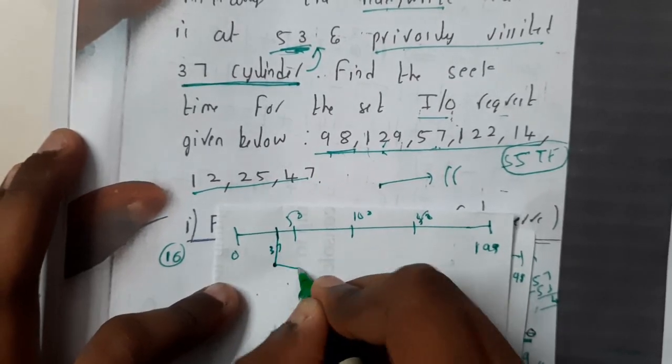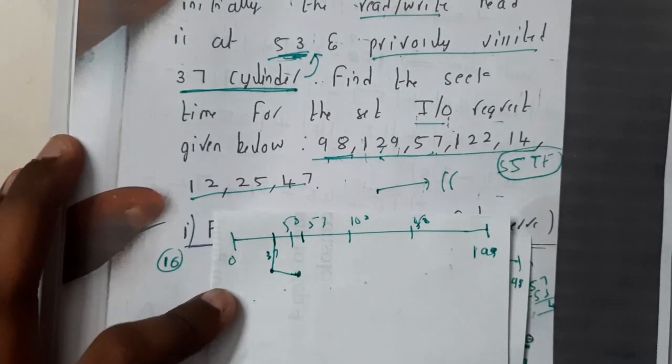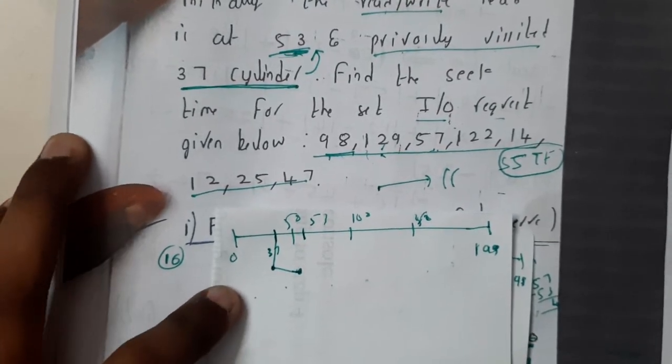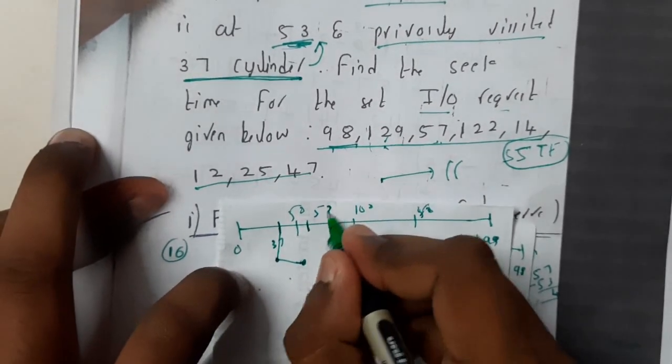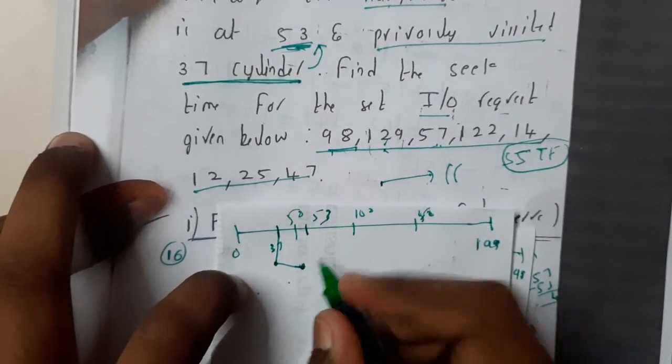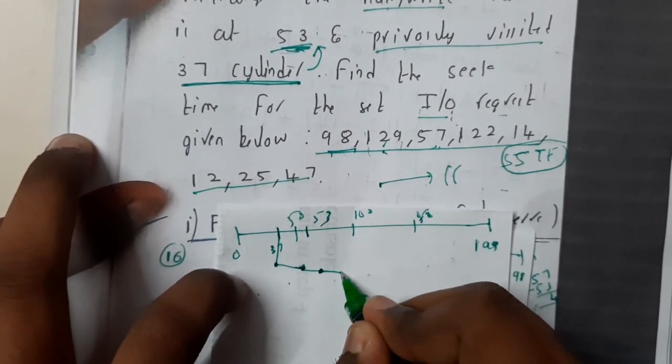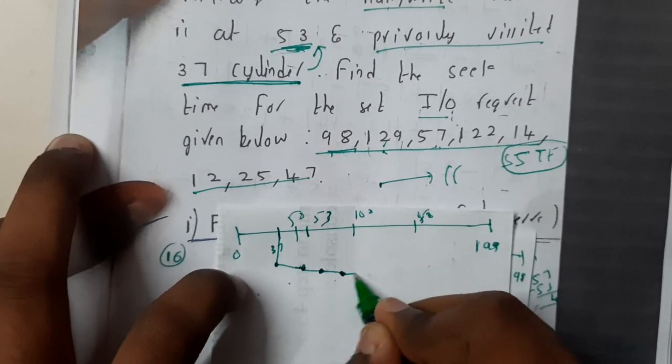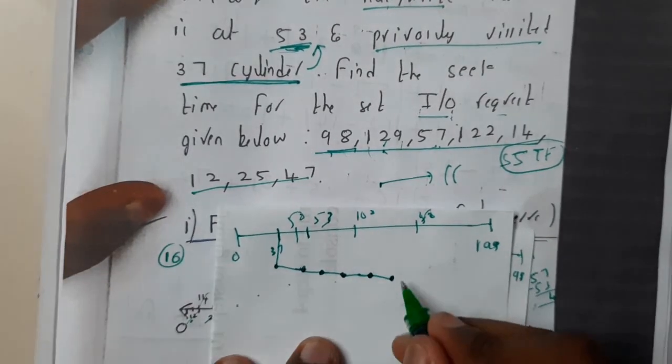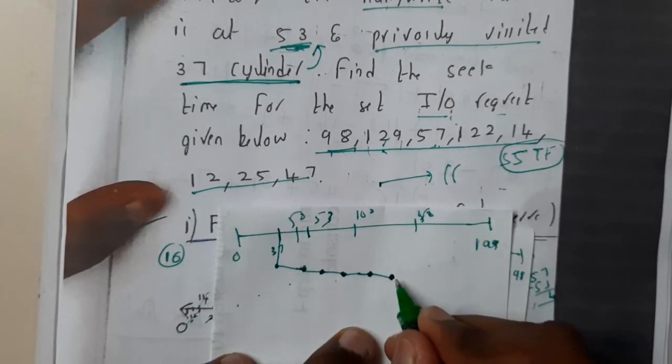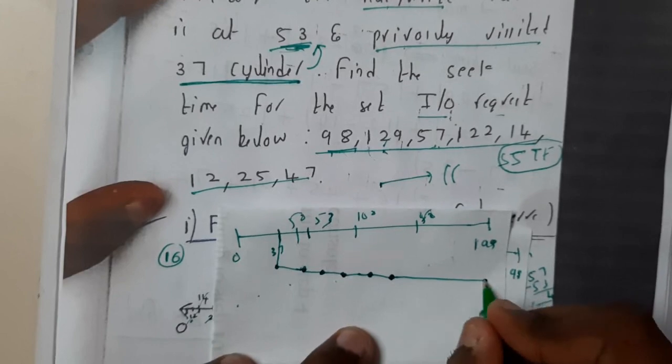In this, we will be assuming the movement as right, and then we will be continuing that way. Here we reached 53. After that, the next highest value is 57, after that 98, after that 122, after that 129. The thing is that once you reached here, after that you will be continuing forward till 199, but you will not stop there. You will continue back.